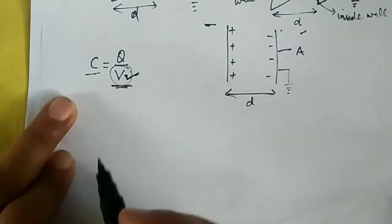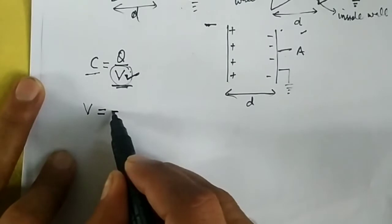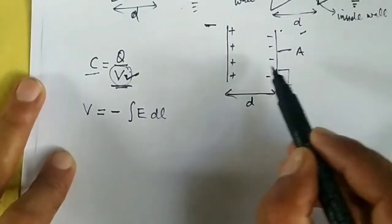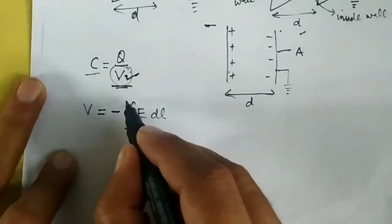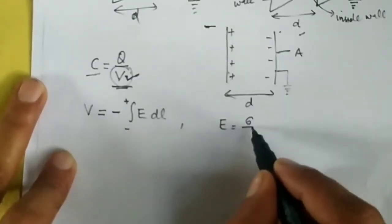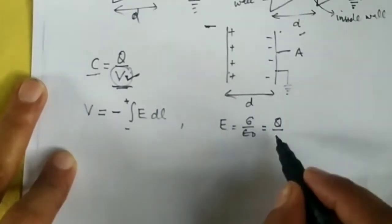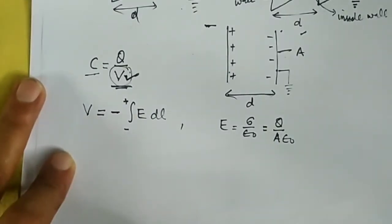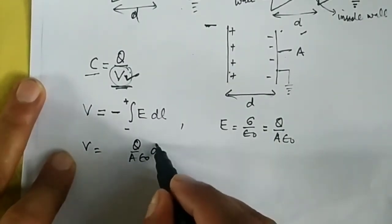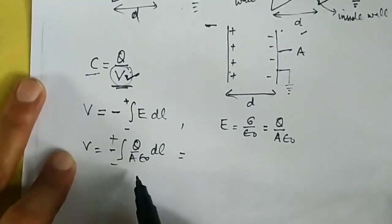The electric potential is defined as the negative of the line integral of the electric field. Since we are moving from the negative plate to the positive plate, we integrate from negative to positive plate. The electric field between two parallel plates is given by sigma divided by epsilon naught, where surface charge density sigma equals Q divided by area A. So we get the integral of Q over A times epsilon naught, with dl from negative plate to positive plate, with a negative sign.